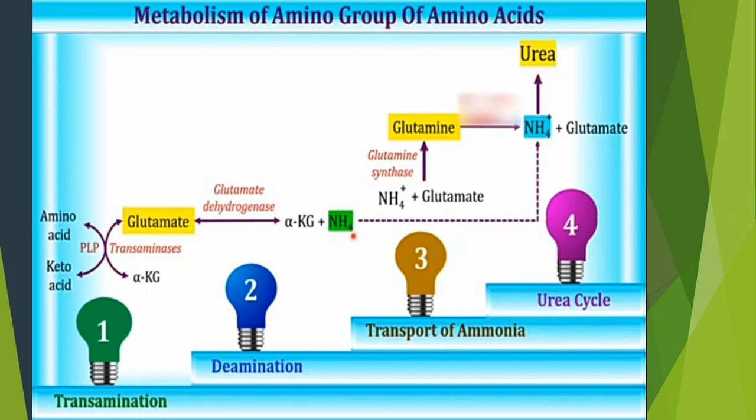In the liver, this ammonium ion is incorporated into urea via the urea cycle. In this video, we mainly focus on urea production — how ammonia is incorporated into urea.